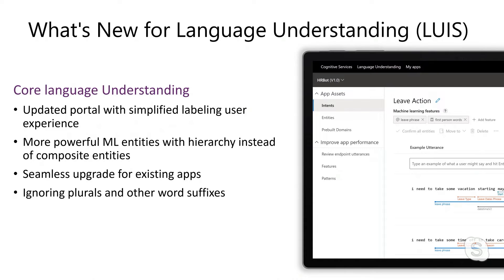We're so excited for people to use the power of these new entities that we will even upgrade them seamlessly for you. If you have old composite entities in your application, we'll pop up a notice to allow you to upgrade if you choose. And it's totally risk-free — we create a new version of your app so you can test it before you ever deploy it in production. Generally whenever we upgrade these kinds of things, it requires some kind of manual process. How are you able to do this?